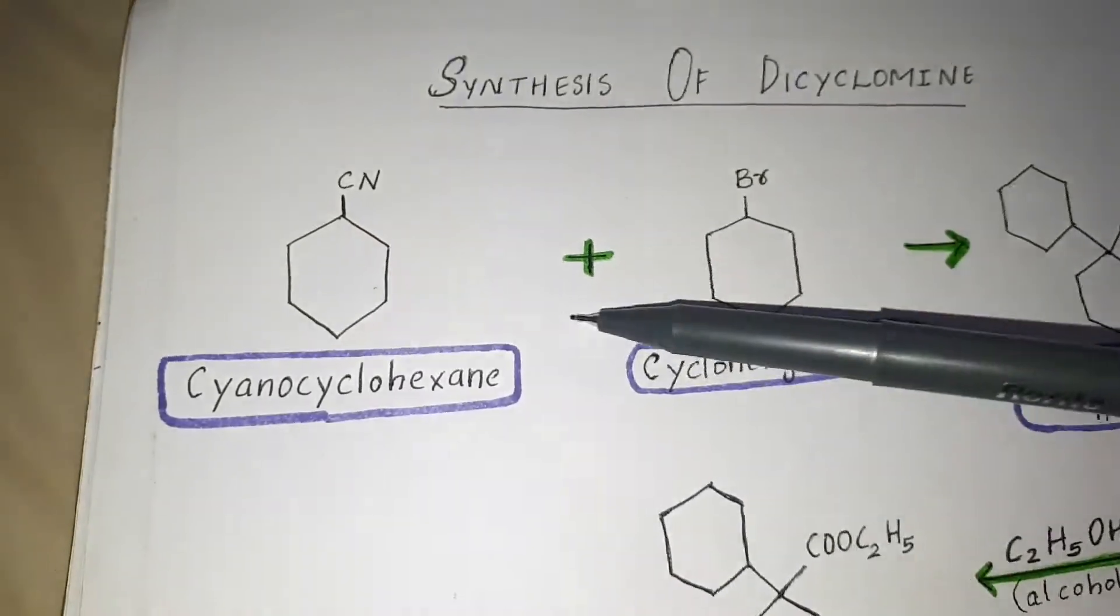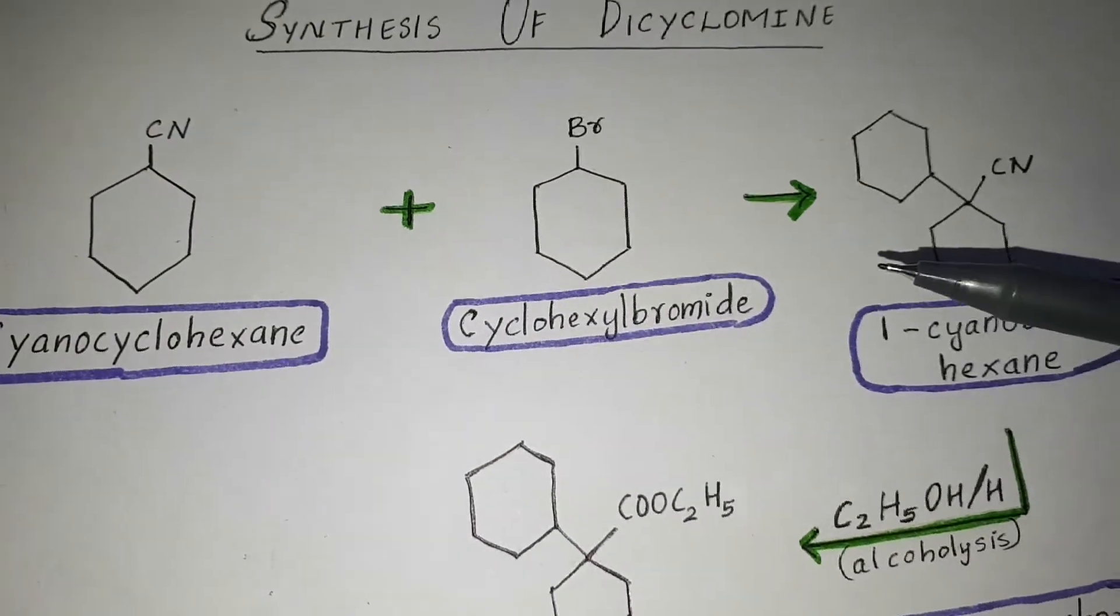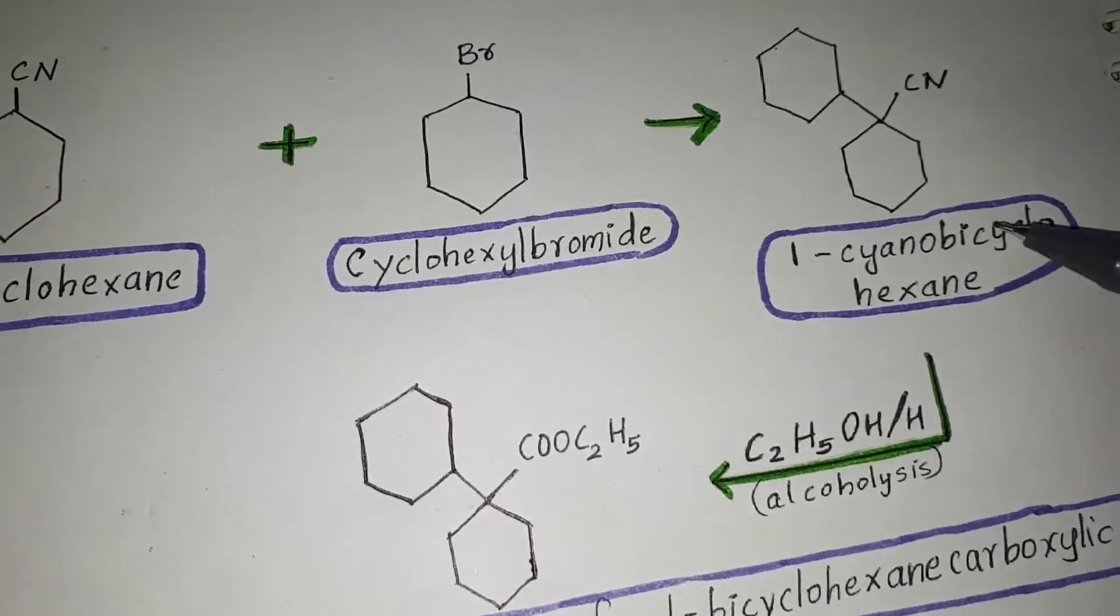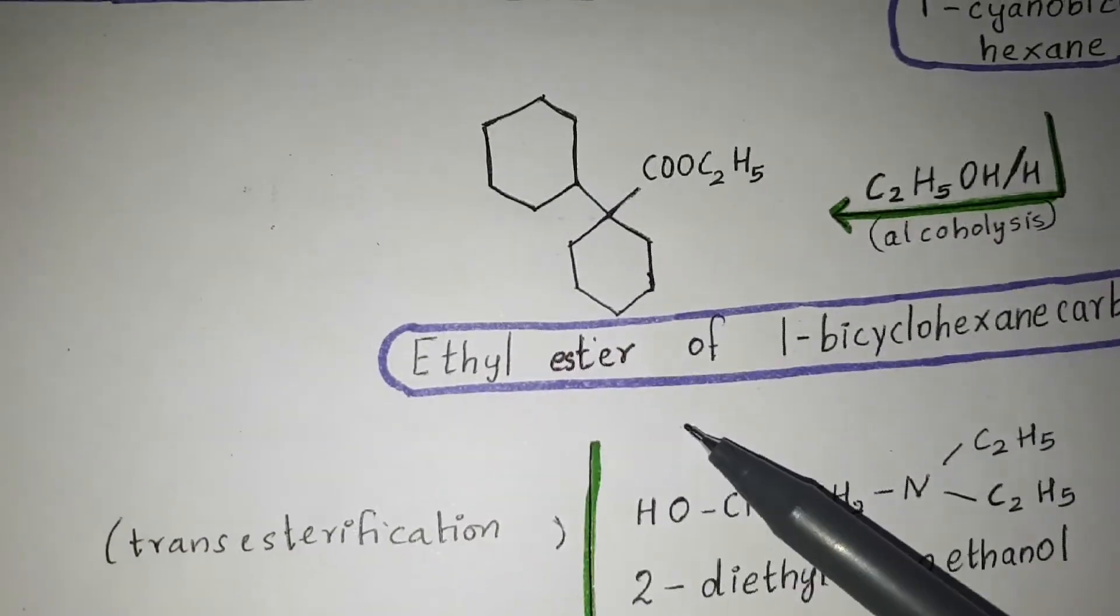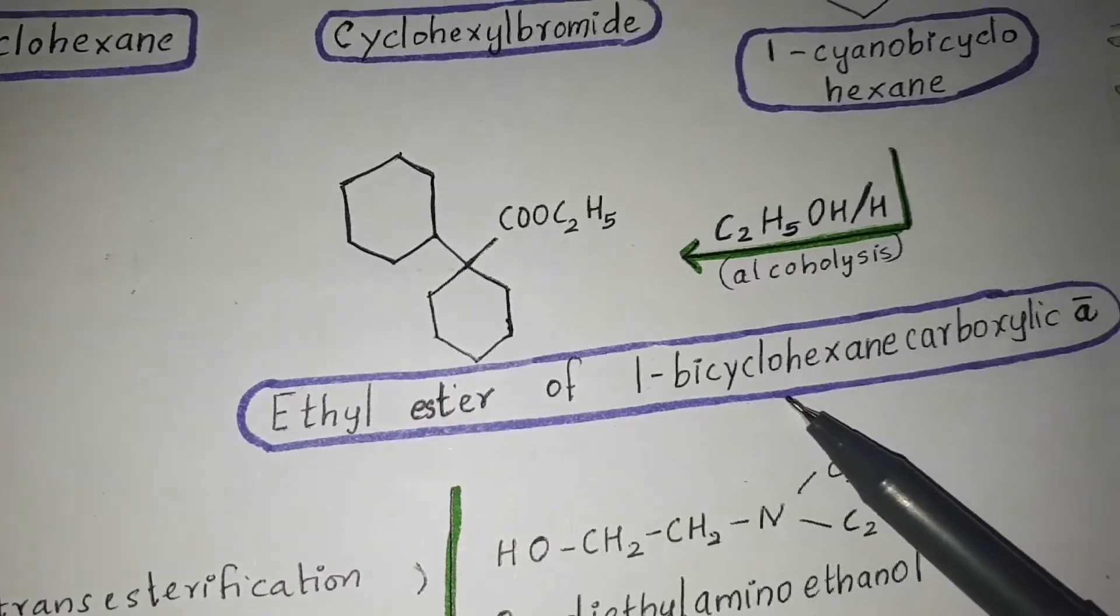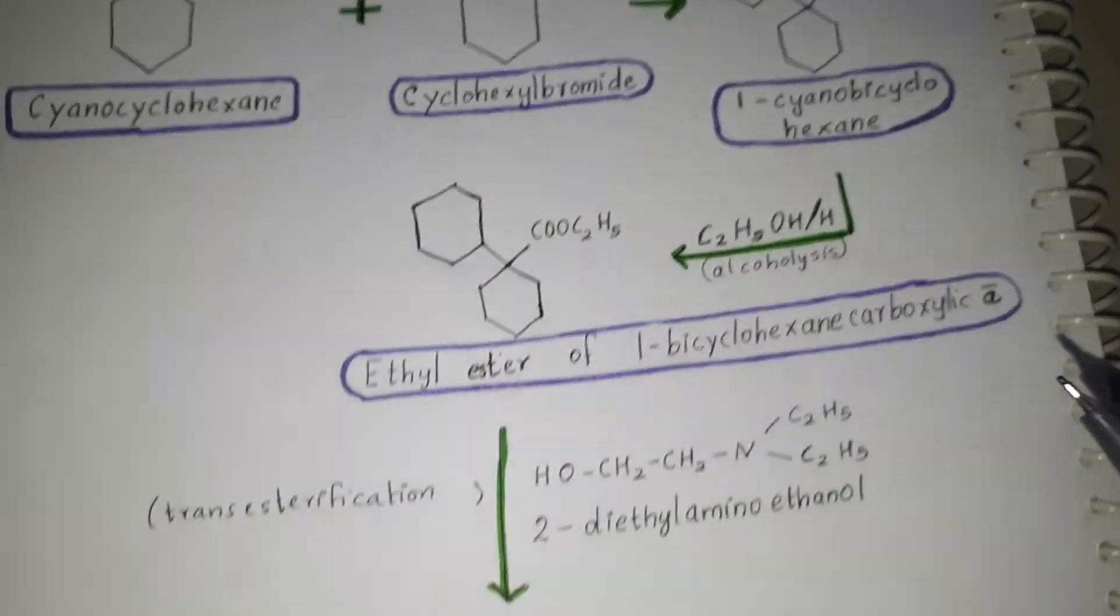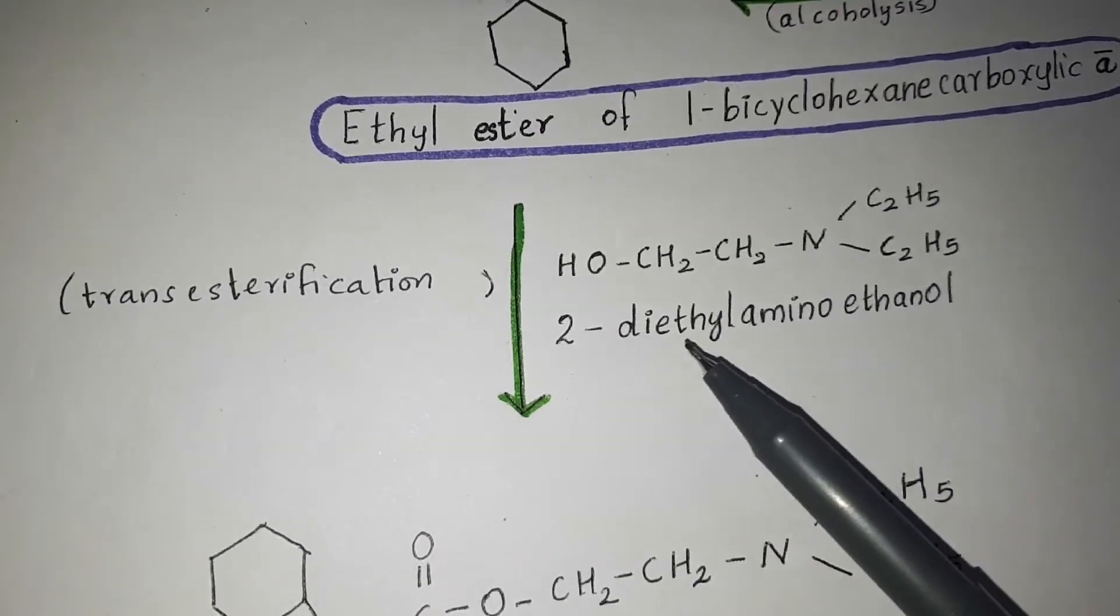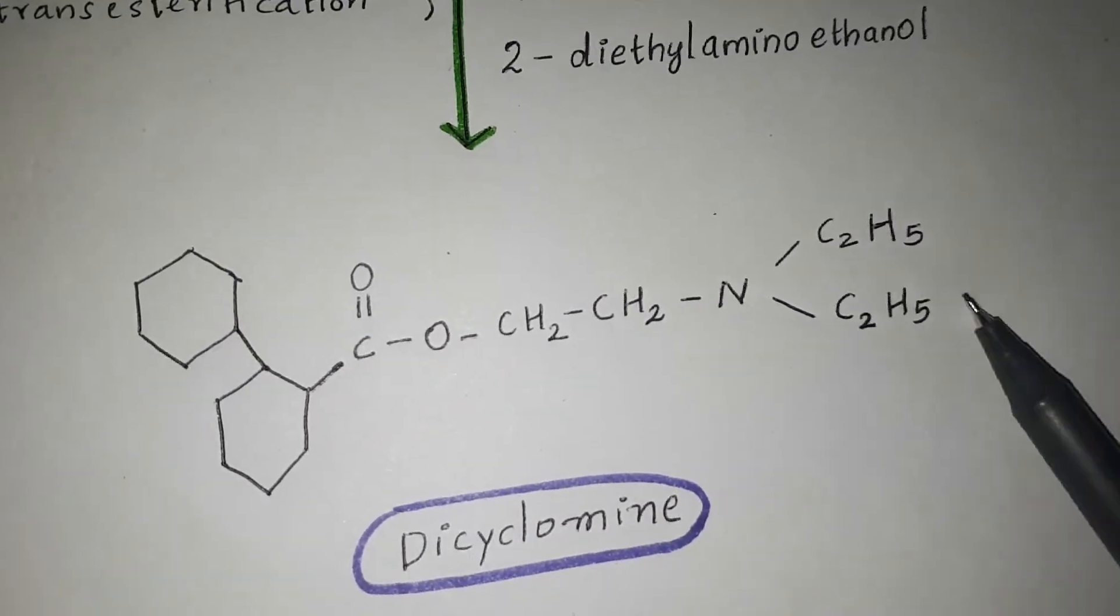Once again: cyanocyclohexane combines with cyclohexyl bromide to form one-cyanobicyclohexane. It undergoes alcoholysis to form ethyl ester of 1-bicyclohexane carboxylic acid, which undergoes transesterification in the presence of 2-diethylaminoethanol to form dicyclomine.